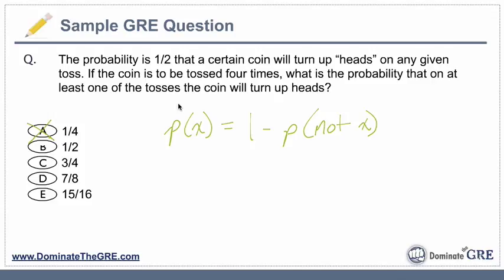Well, because they're asking what's the probability of getting at least one heads. So one heads out of what? Four flips of a coin — we're going to flip it four times. So maybe you think, oh, I'm getting one out of four flips, one-fourth. That's a wrong answer. So let's eliminate that straight away.